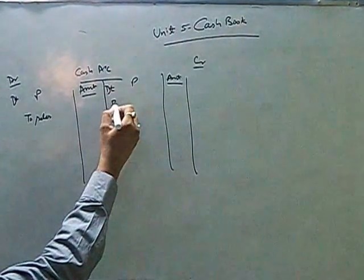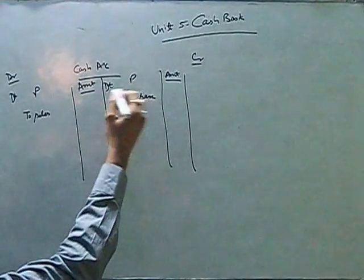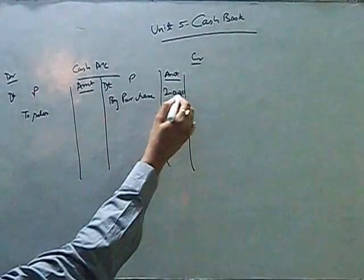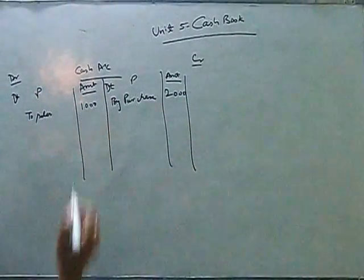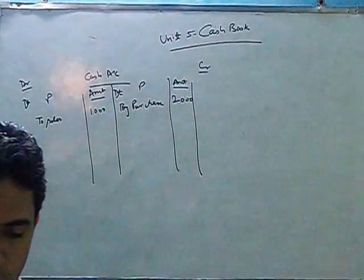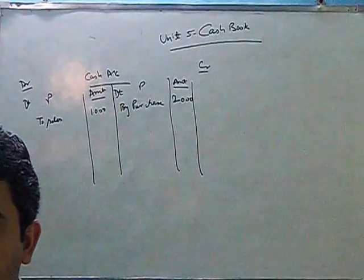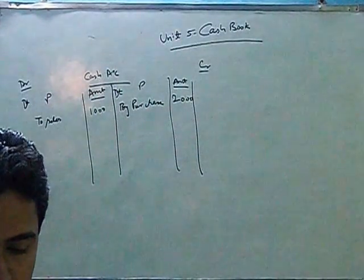And whenever cash is going out, we will have purchase debit to cash, say 2,000 rupees and wages say 1,000 rupees. So this is the simplest form of cash account. When cash book is prepared in this form, we call it a simple cash book.